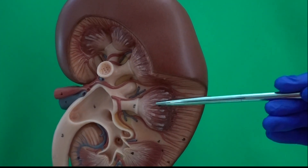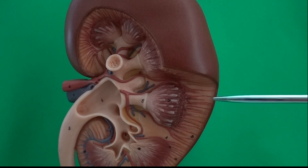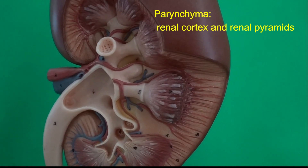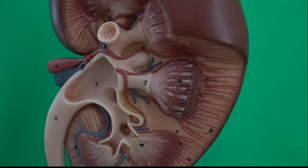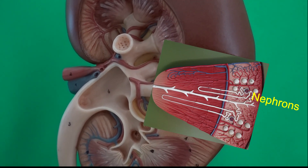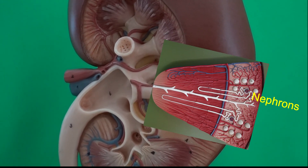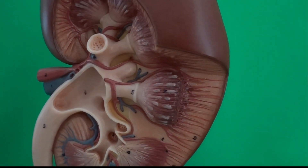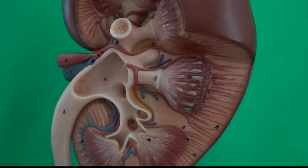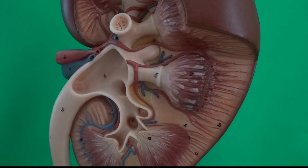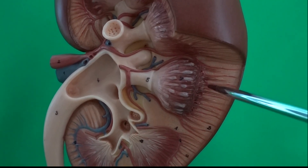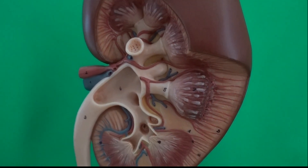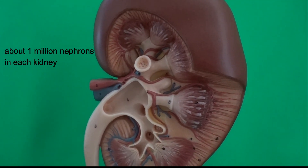The renal cortex and renal pyramid together form the parenchyma of the kidney, meaning the functional part. The microscopic structures called nephrons, which actually filter blood and produce urine, are located in the renal cortex and renal pyramid. In each kidney, we have about one million nephrons.